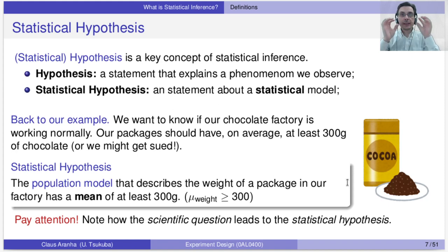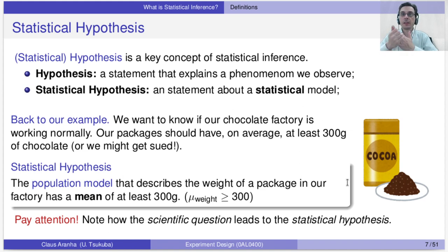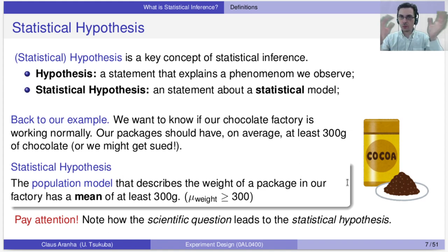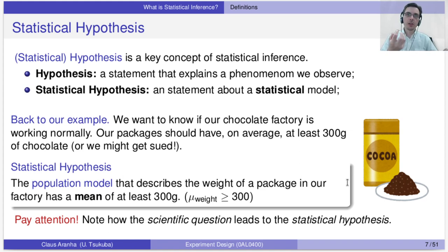The key idea of statistical inference is the statistical hypothesis, and you've probably heard of statistical inference as hypothesis testing. We create a hypothesis and do experiments to see if this hypothesis is true or not. Now it's important to note that we're talking about statistical hypothesis — that is different from just a general hypothesis. A general hypothesis is a statement that explains a phenomenon we observed: we have a rock and we don't see any tigers around, so this rock protects you from tigers. That's a hypothesis — a pretty stupid one, but it's a hypothesis.